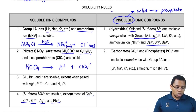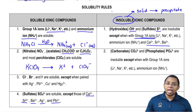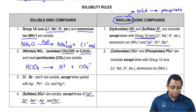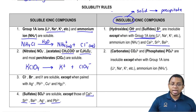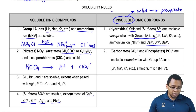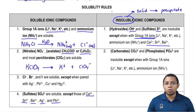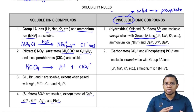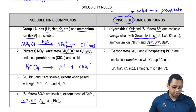Calcium, strontium, and barium are soluble with everyone except for sulfate, carbonate, and phosphate. So basically calcium, strontium, and barium are insoluble with the '-ates': sulfates, carbonates, and phosphates.